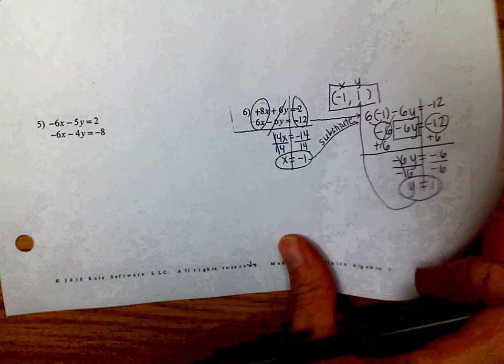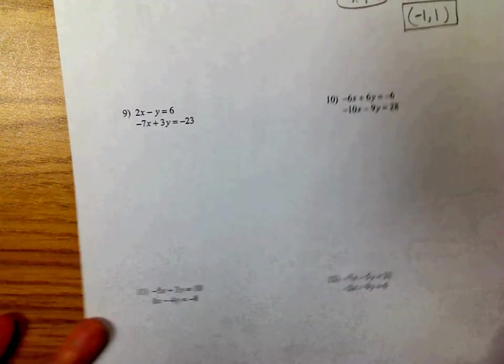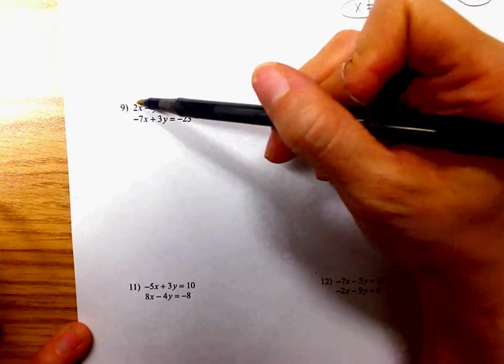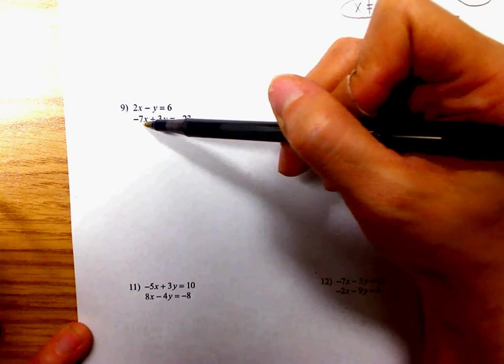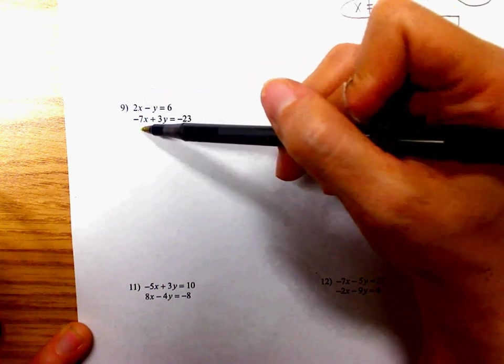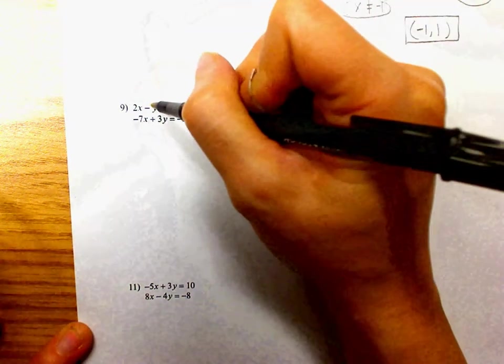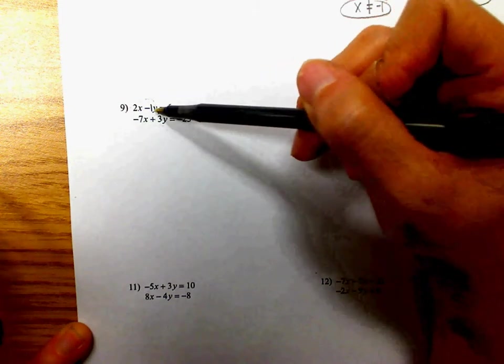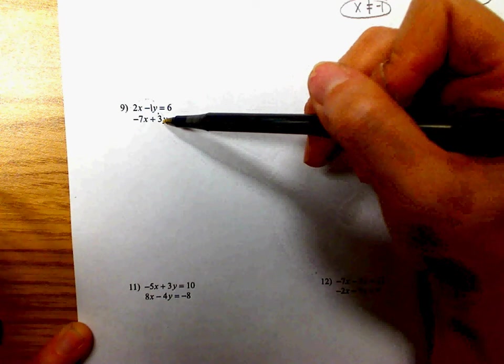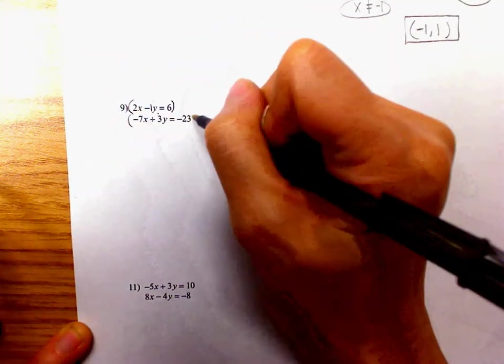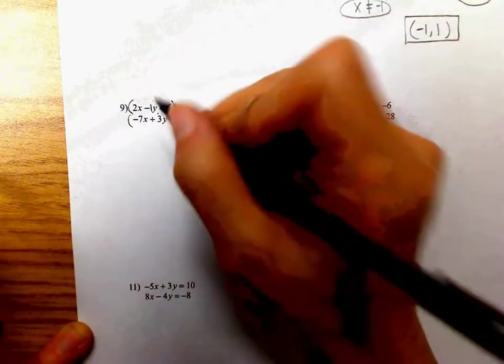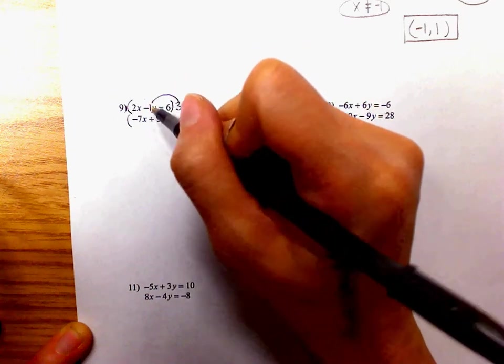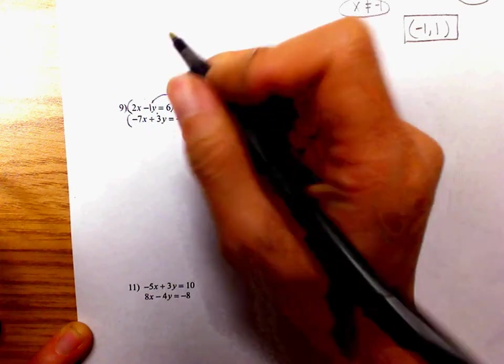Number 9. Again, there's many ways to do this, but let's take a look. Let's say you want to eliminate the X's. Then you would have to multiply the top by 7 and the bottom by 2. That way they become a 14x and a -14x and they'll eliminate. Or you can look at here, you have a -1. So let's say you want to eliminate these. Then you only have to multiply the top by 3 and then that -3y will eliminate with a +3y. So I'm going to do this one right here. Just multiply by a 3 here.